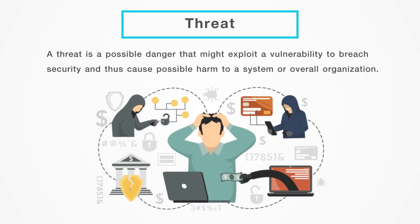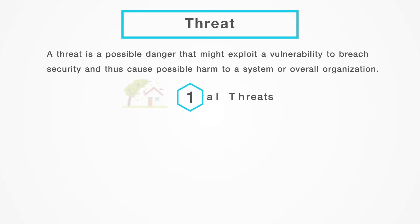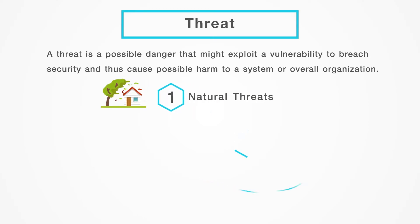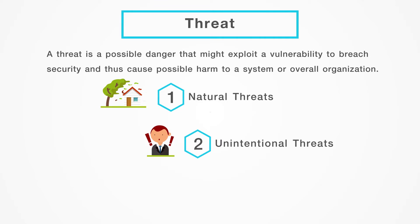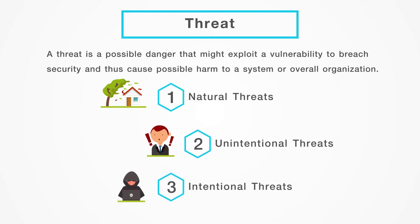There are three main types of threats: natural threats, for example flash floods or autonomous events; unintentional threats, such as an employee mistakenly accessing the wrong information; and intentional threats. There are many examples of intentional threats, including spyware, malware, and adware, or the actions of a malicious employee. In addition, computer viruses, worms, and Trojan horses are also categorized as threats because they could potentially cause harm to your organization.